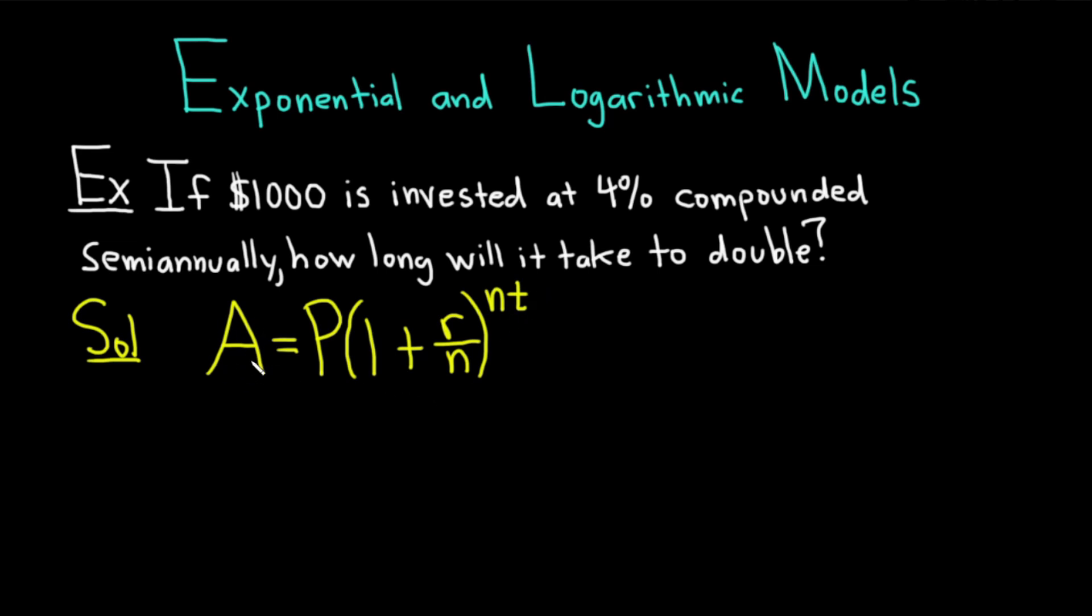So A is the accumulated amount, it's how much we have. P is the principal. So in our particular example, P is going to be equal to 1,000. That's how much money we start with. R is the interest rate in decimal form. So because we have 4%, for us, it's going to be 0.04. And semi-annually means it's compounded twice. So N is how many times it's compounded. So N is equal to 2 because it's semi-annually. If I had said quarterly, N would be 4. Monthly, N would be 12. Daily, N would be 365.